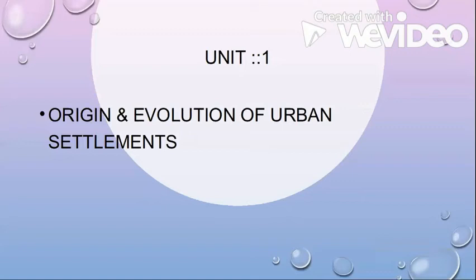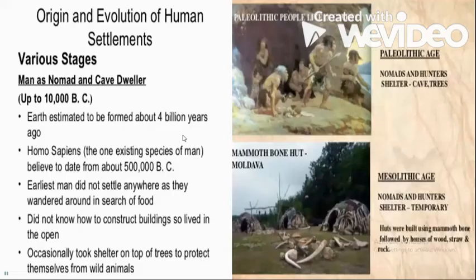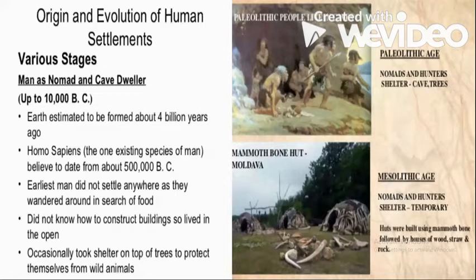Today we will be studying the origin and evolution of urban settlements. Before starting, we must know that urban settlements did not start all of a sudden. At first it was rural settlement, and then came urban settlements. We have to see how human settlements have evolved.